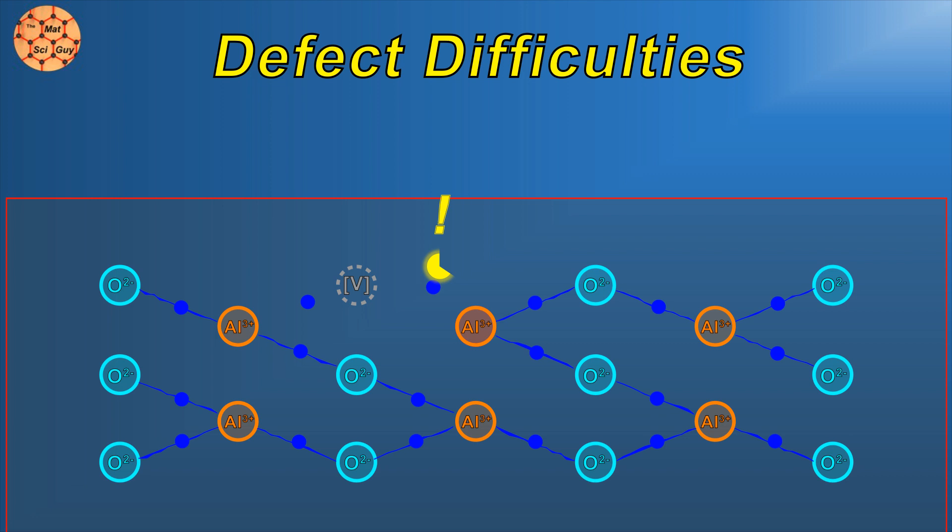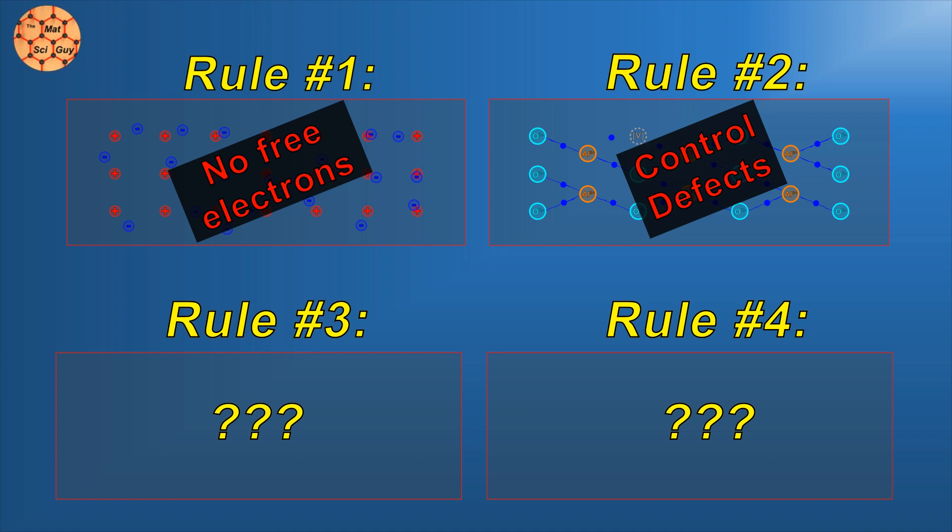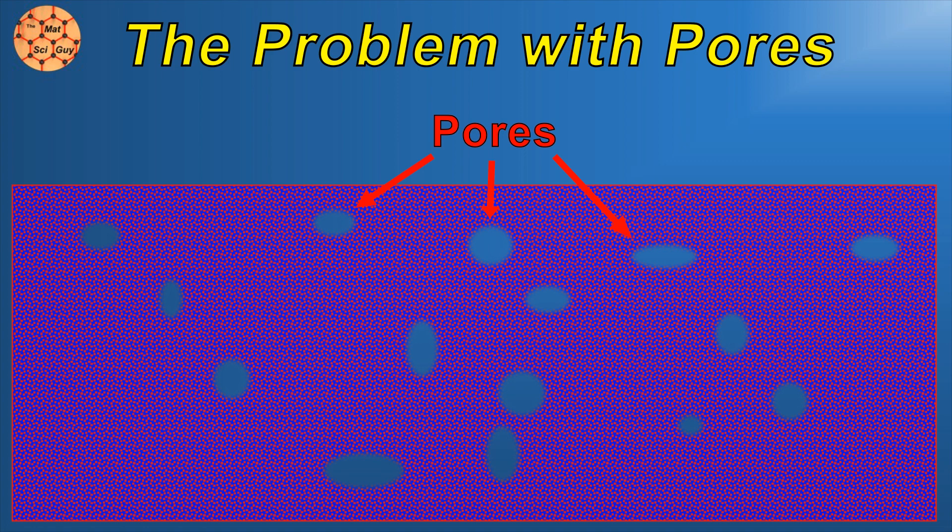Even if things are relatively clean at the atomic scale and our photon survives the initial plunge, there are still some big obstacles he might run into. Larger empty spaces in the material, called pores, can also scatter light. This seems like a bigger version of the vacancies we talked about earlier, but actually the effect is completely different.